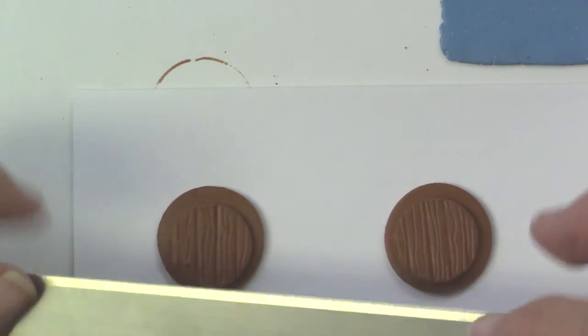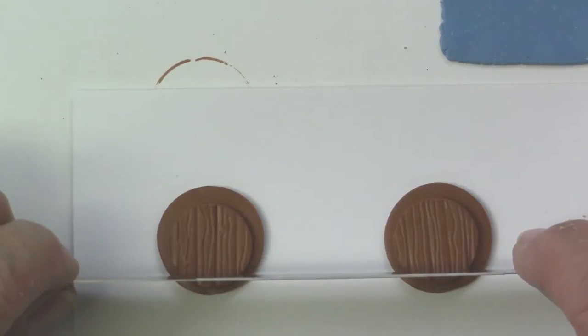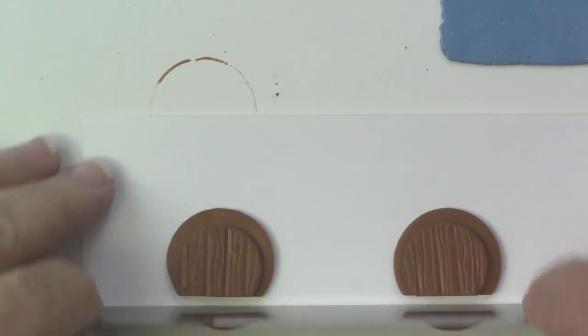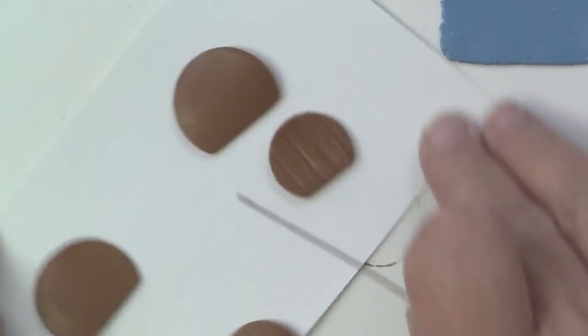And then I'll take my blade and cut off the bottom so I get a little door shape. And there you go. You see how I just cut the bottom off.